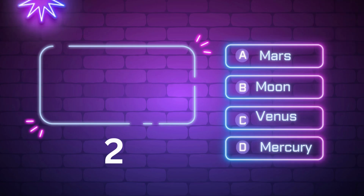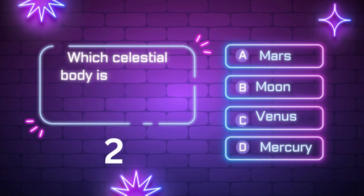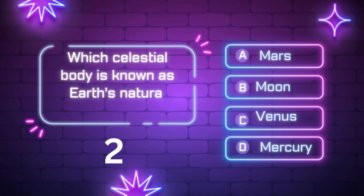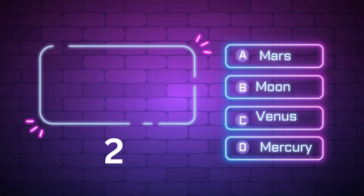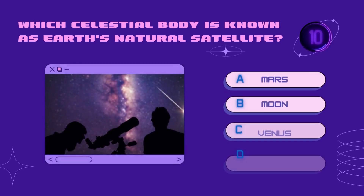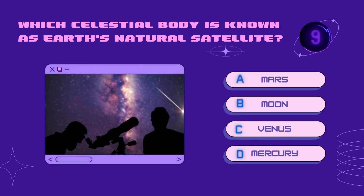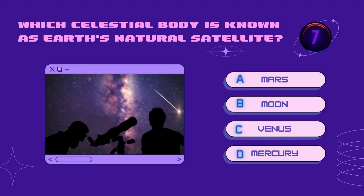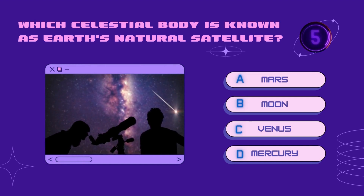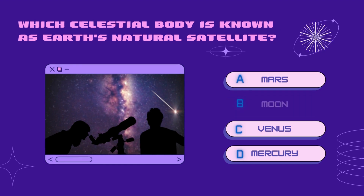Which celestial body is known as Earth's natural satellite? Mars, Moon, Venus, Mercury? Your time starts now. Right answer is Moon.